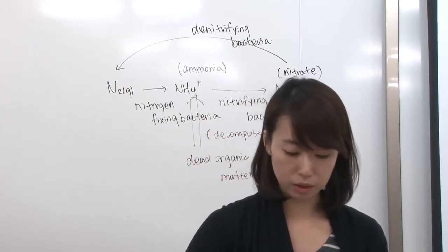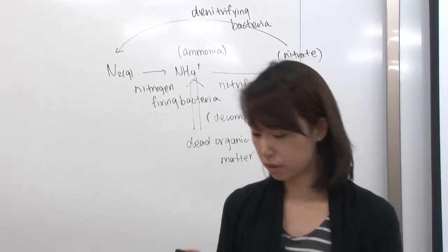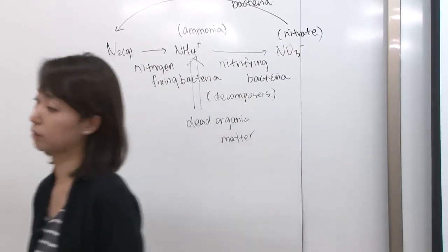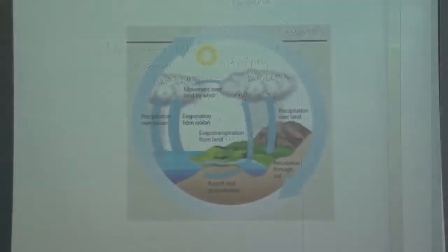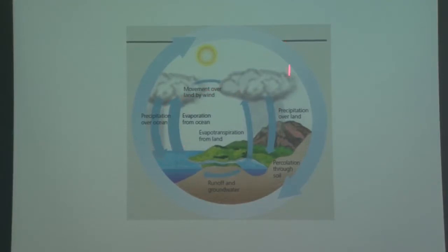Let's look at a picture of these cycles. This is the water cycle — so precipitation, evaporation, and it gets absorbed into the ground. From the ground, plants and animals interact through cellular respiration and photosynthesis.